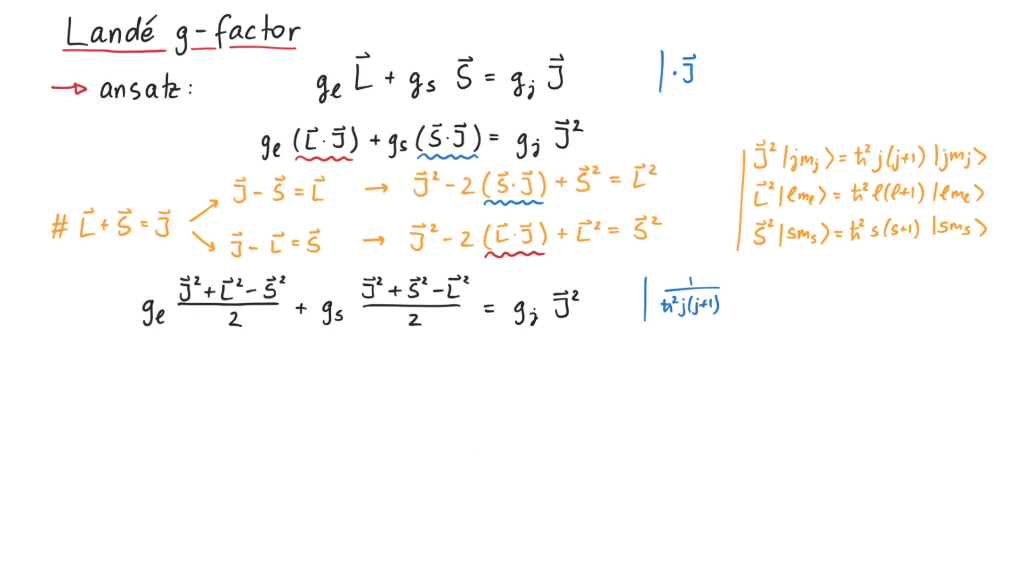Therefore, this equation is not applicable in the case that j is 0. But since for j equals 0, the energy shift vanishes anyway, it does not matter what value g-j has in that case. With this, we get the final expression for the Landé g-factor, which, as promised, depends on g-l, g-s as well as l, s and j.